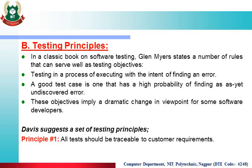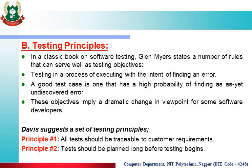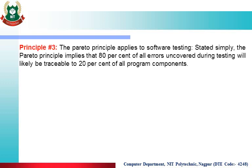Davis suggests a set of testing principles. First principle: all tests should be traceable to the customer requirement. Second: tests should be planned long before testing begins — test cases should be planned before testing starts. Third: the Pareto principle applied to software testing implies that 80% of all errors uncovered during testing will be traceable to 20% of all program components.